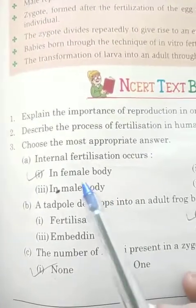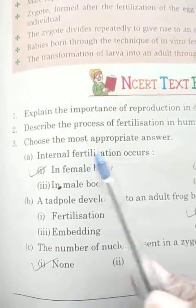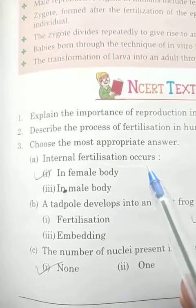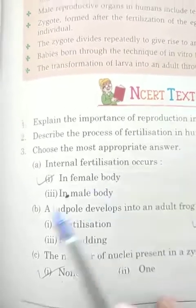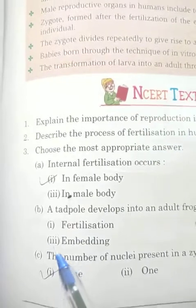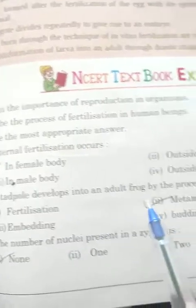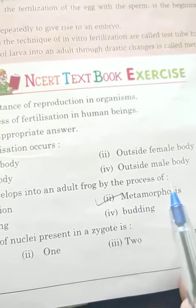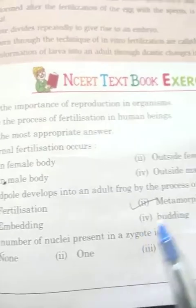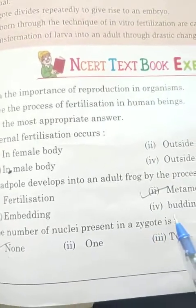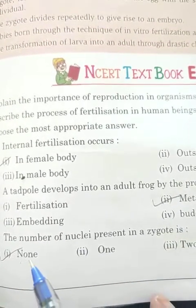Today we will do the MCQs and other exercises of the chapter. Number 1. Question No. 1: Choose the important and most appropriate answer. Internal fertilization occurs - internal fertilization kahan hota hai? First number hai in female body. Number 2: A tadpole develops into an adult frog by the process of metamorphosis. Number 3 hai the number of nuclei present in a zygote is none. Okay, now change your page.